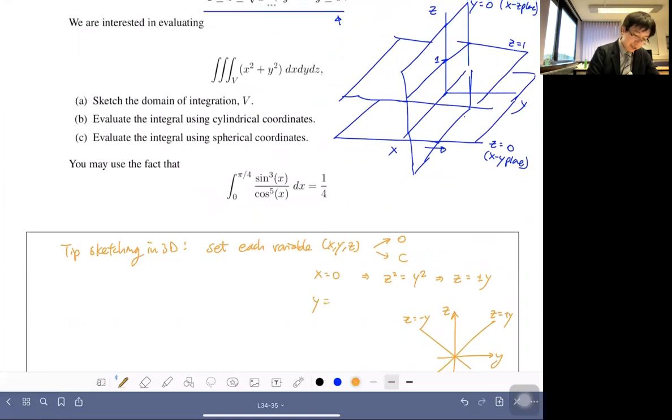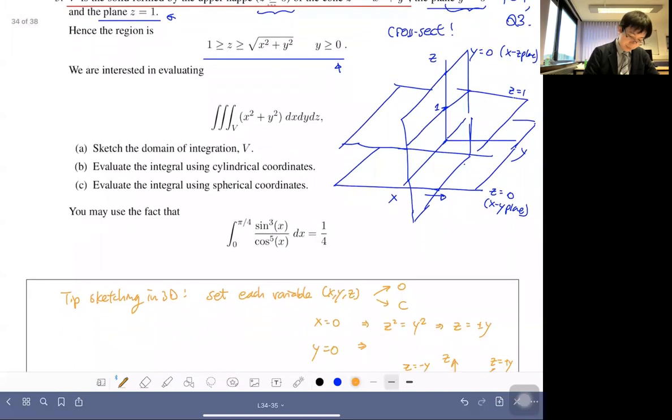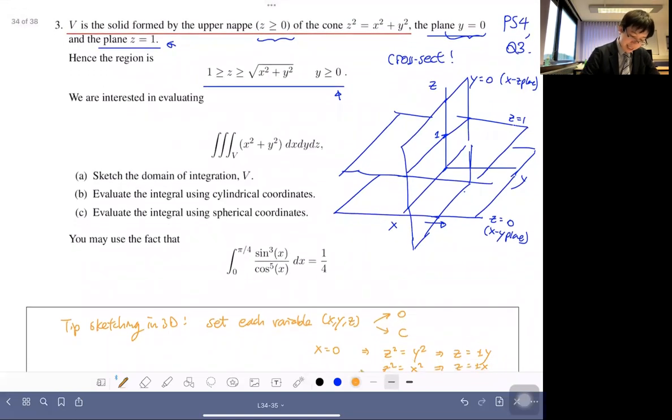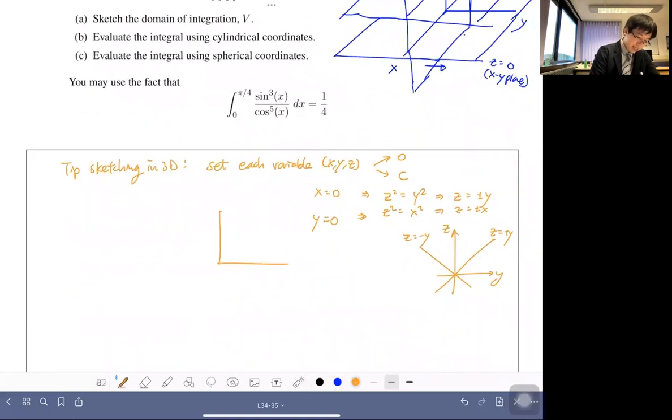If I set y equals zero, I get the same thing. This is symmetric, right? Plus or minus x. Okay, so if on the graph it means that, let's draw a new one over here.